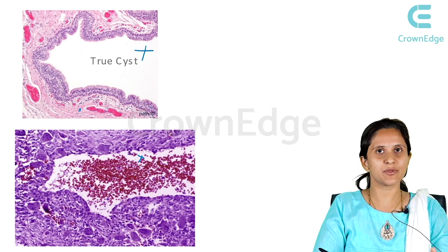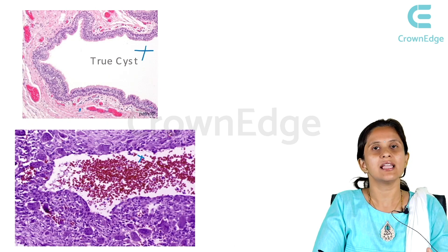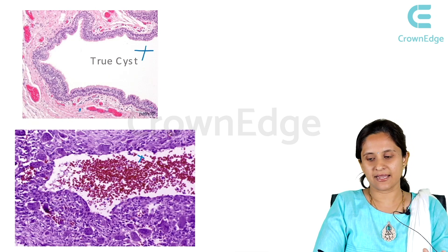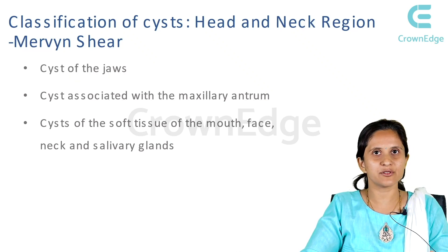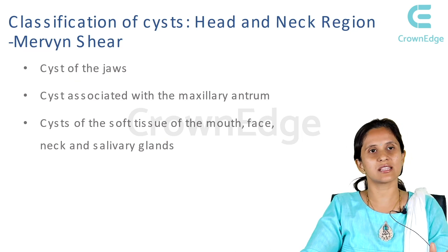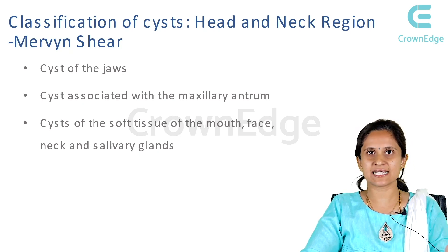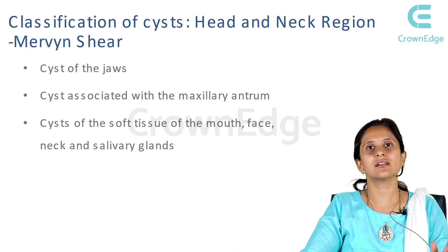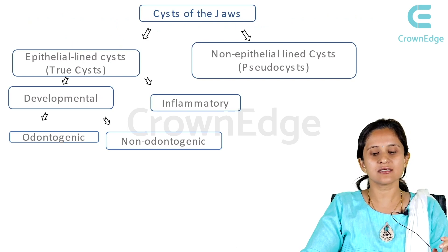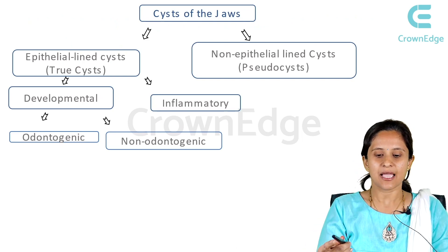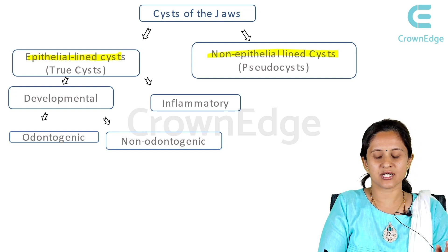This is important because most of the cysts we encounter are named according to the contents present in the lumen, the type of epithelium, and the connective tissue component supporting the epithelial lining. The classification of cysts of the head and neck as given by Mervyn Shear is divided into cysts present in the jaws (maxilla or mandible), cysts in the maxillary sinus or antrum region, and cysts lying in the soft tissues of the head and neck. The cysts of the jaws are divided into epithelial-lined cysts (true cysts) and non-epithelial-lined cysts (pseudocysts).